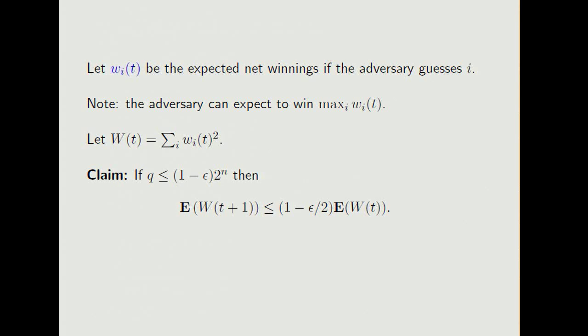And I claim that if the number of queries is at most 1 minus epsilon times the size of the domain, then the expected value of this thing at time T plus 1 is at most 1 minus epsilon over 2 times the expected value at time T. So we get this nice geometric decay in the expectation. So after sufficiently many rounds, it's likely to be very small. And hence so is the max.